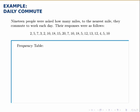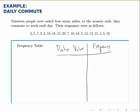The frequency table lists each possible data value and the number of times that data value occurs. So we put two columns like this, one for the data values and one for their frequencies.